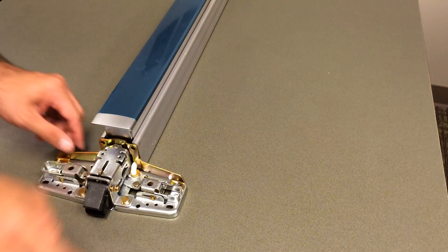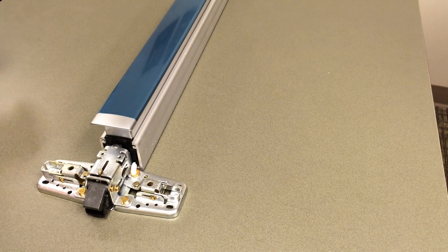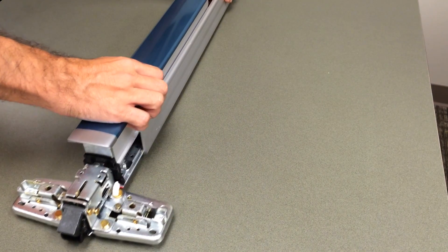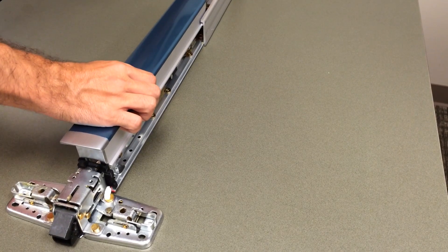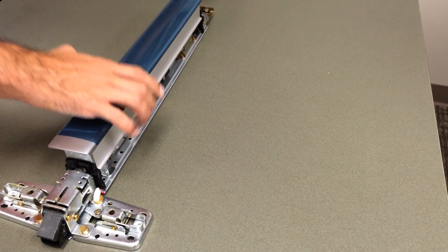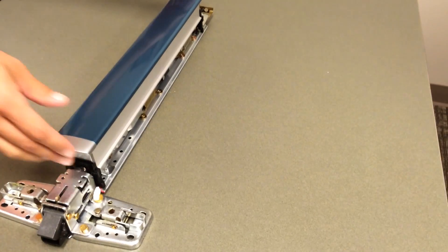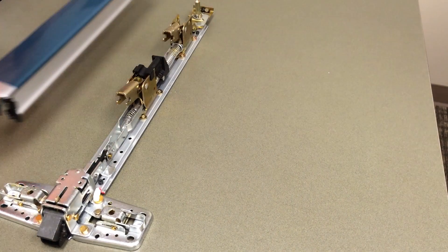Once those screws are removed, we'll take off the rear bracket. Next we're going to slide off the base rail, and once the base rail is off we're going to remove the push pad.